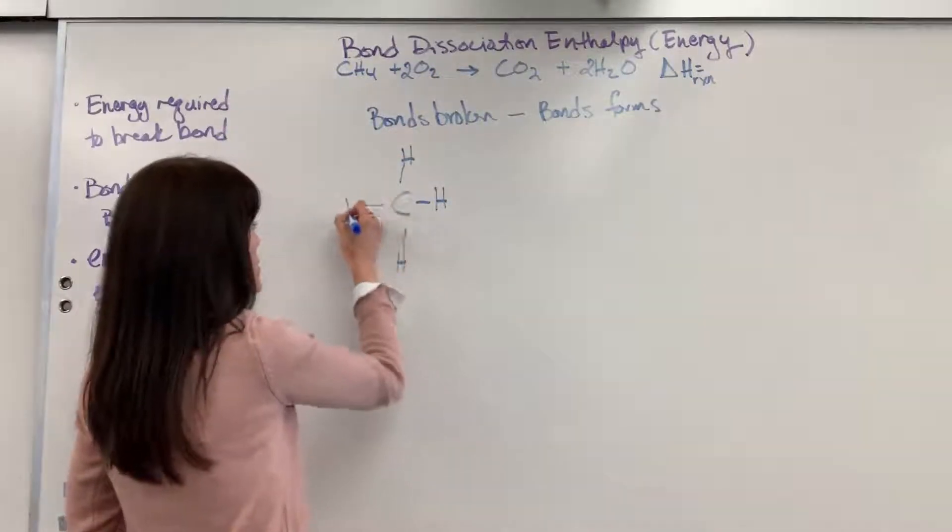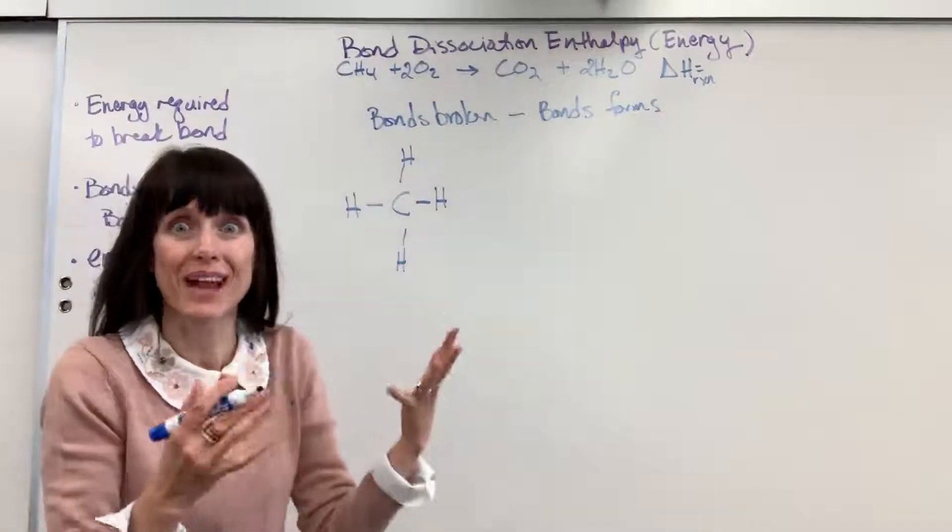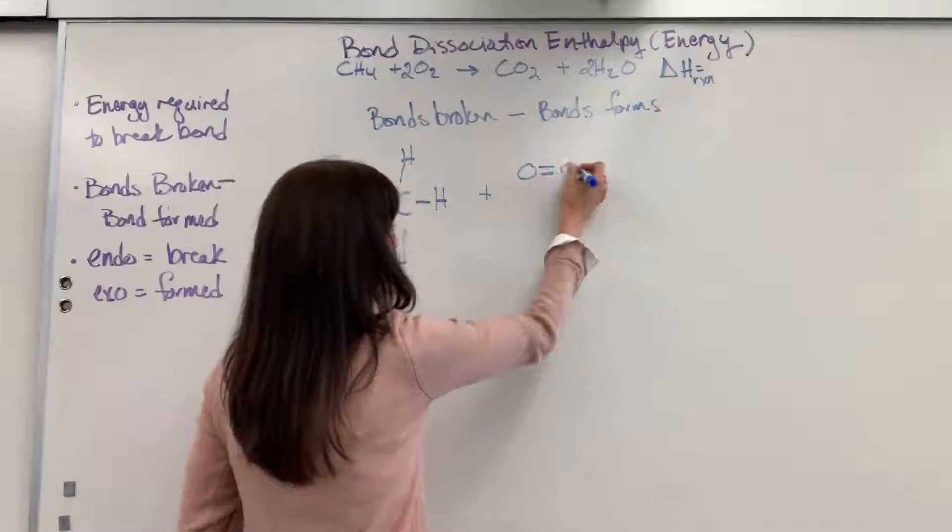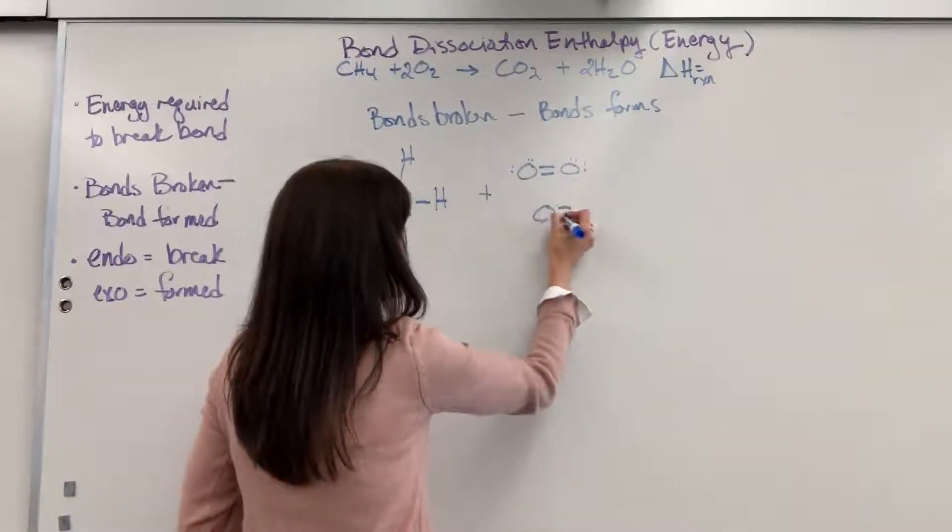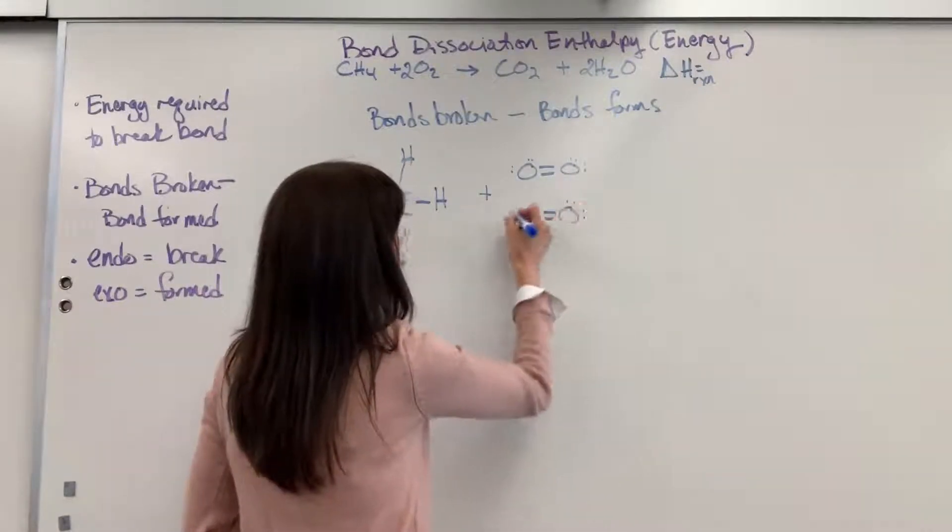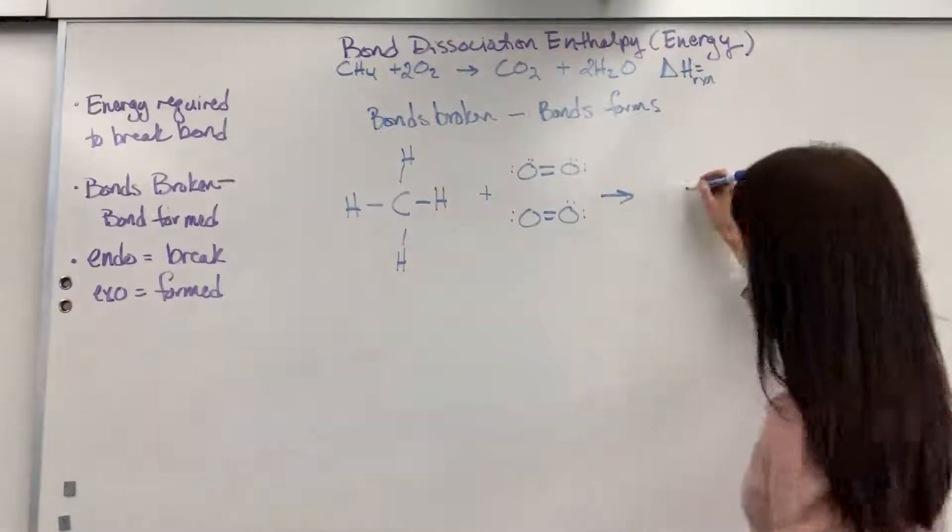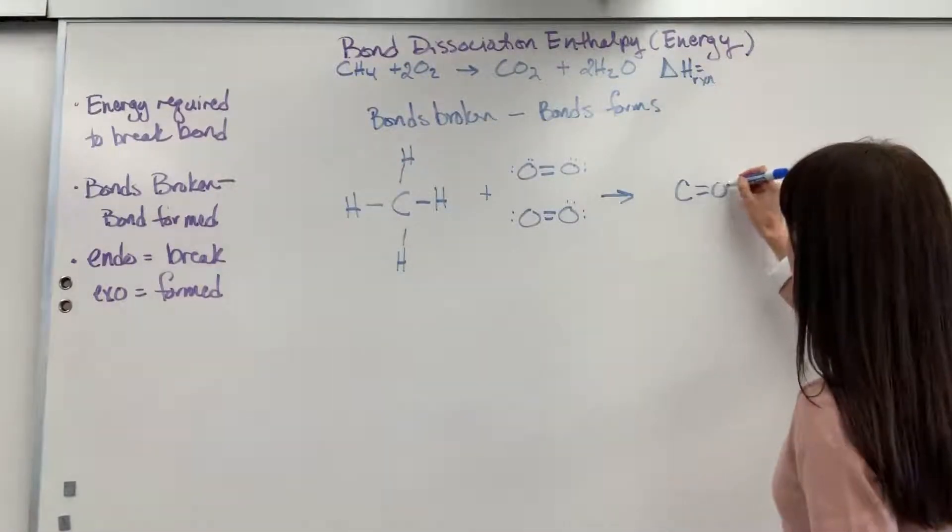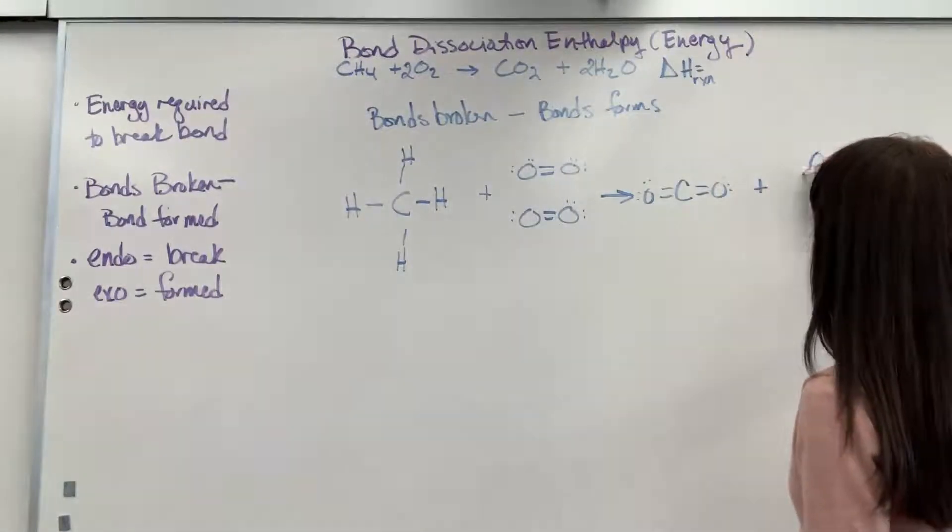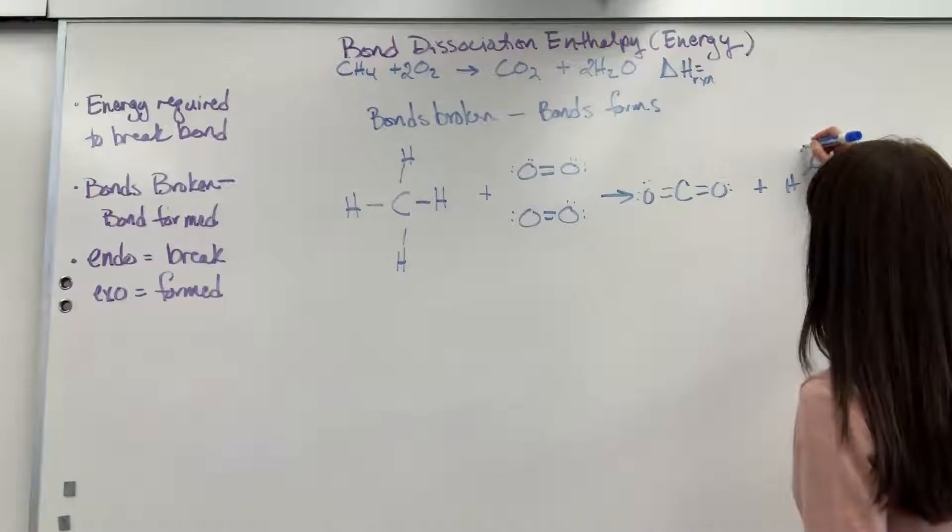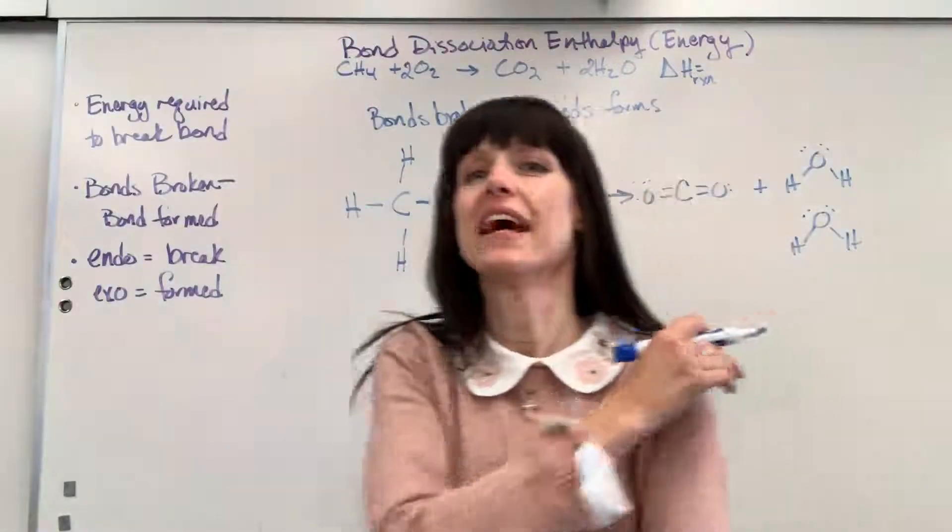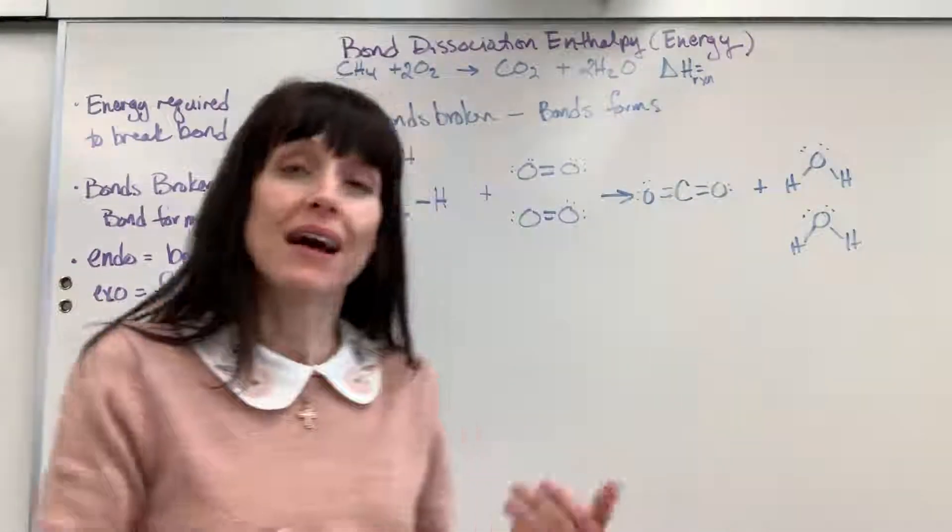Now I'm going to show all of the bonds because we have to count them. I've got one mole of methane plus two moles of oxygen. Two moles of oxygen is going to yield one mole of carbon dioxide plus two moles of water. So this is very visual. I can see every single bond.